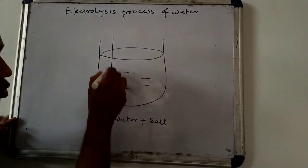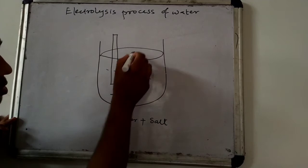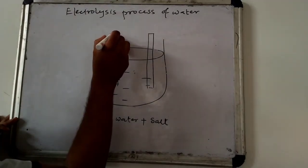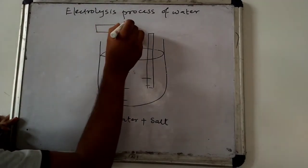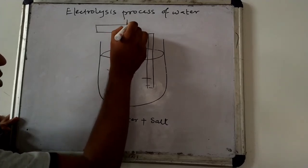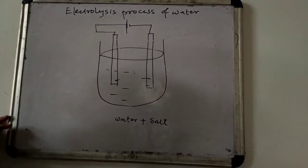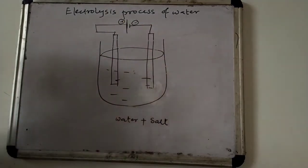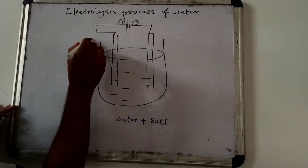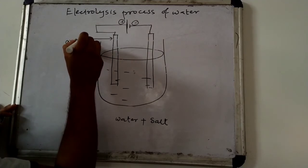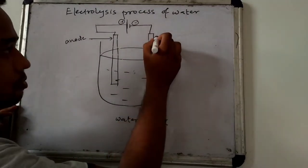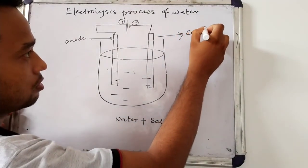Now we will take two electrodes. One of the electrodes is connected to the positive terminal of the battery and the other is connected to the negative terminal of the battery. The electrode connected to the positive terminal is called the anode, and the electrode connected to the negative terminal is called the cathode.